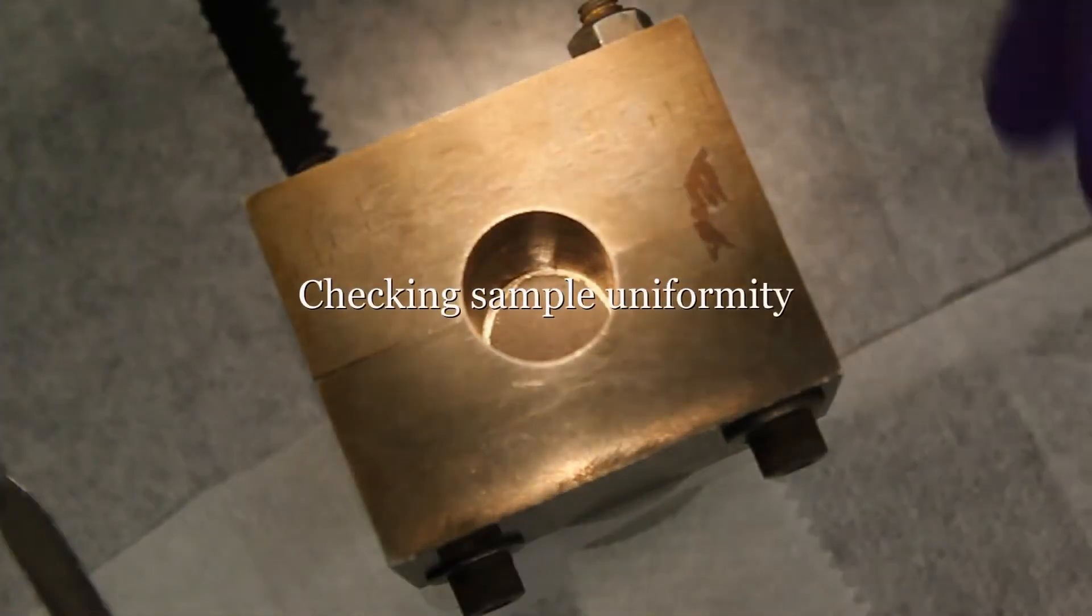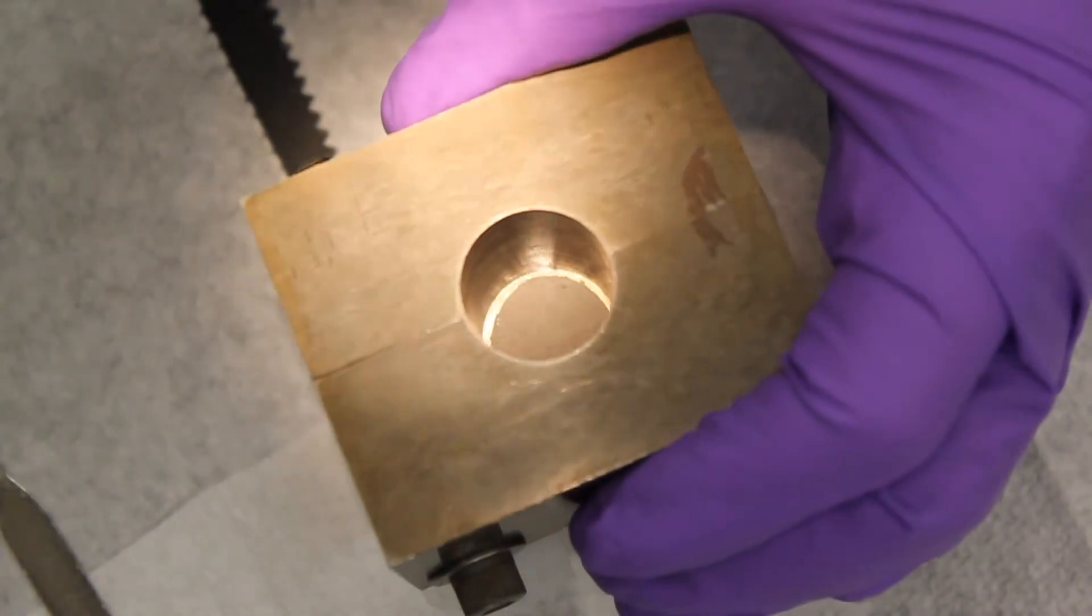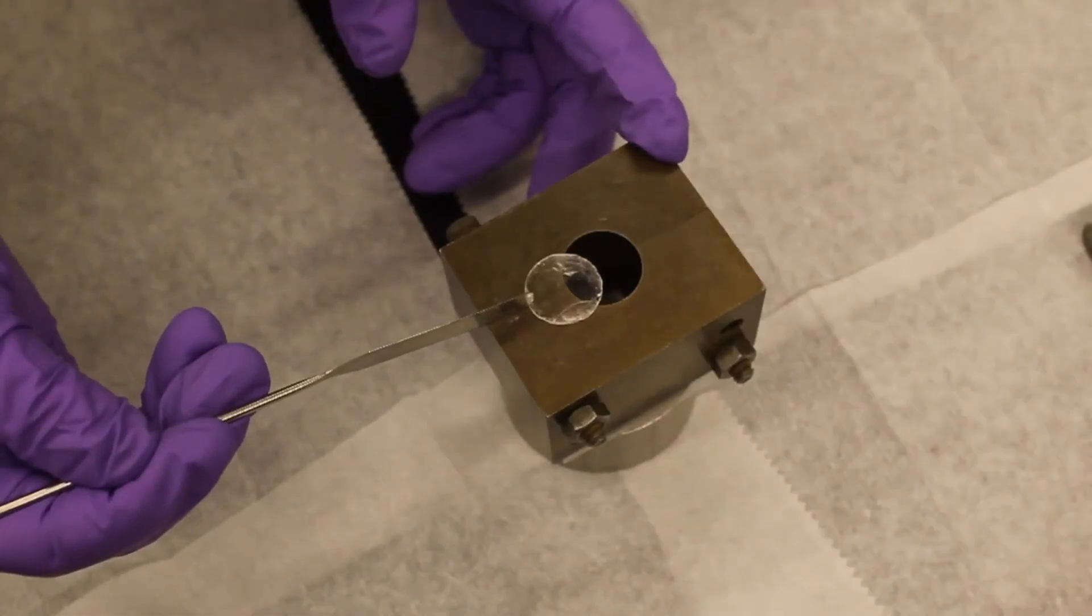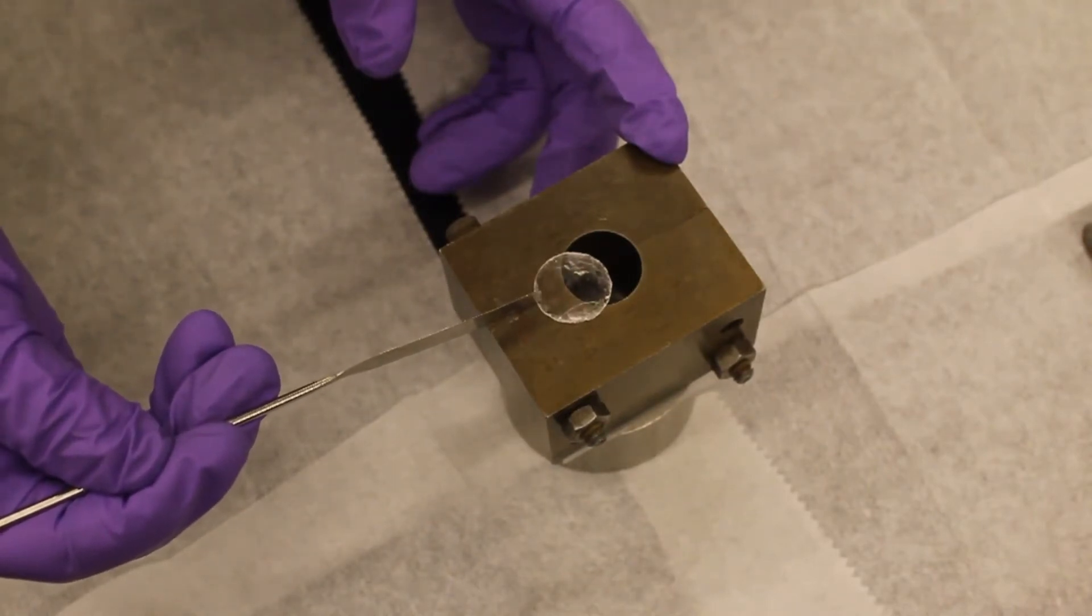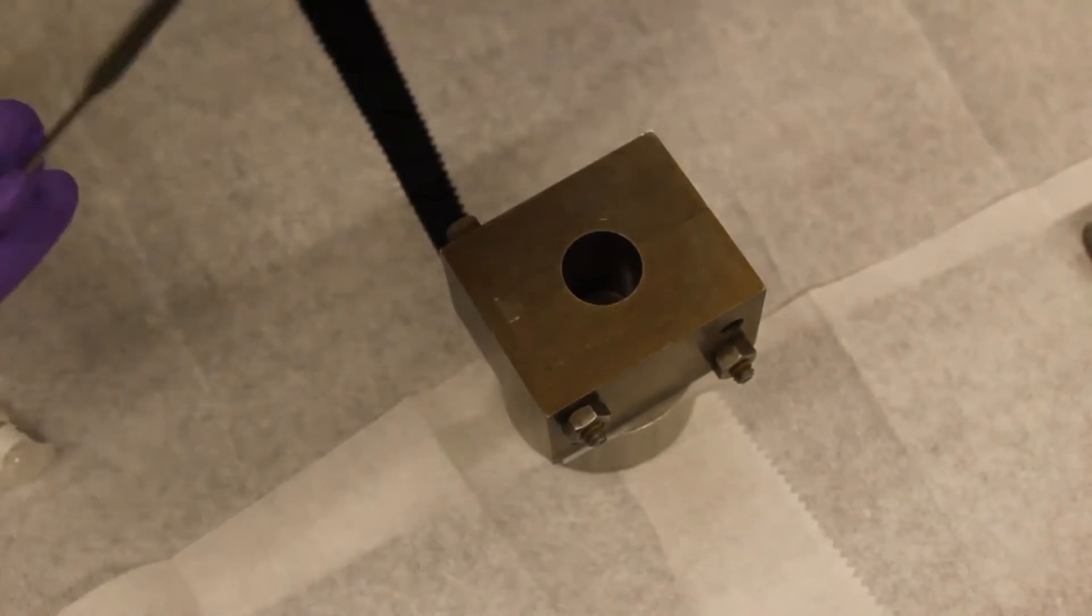To make sure the sample is uniform, you can lift the die up and look through the mecha to make sure there's no light coming through your sample. We're going to put another piece of mecha on top of the sample. In this process, make sure the mecha does not change the uniformity of the sample.